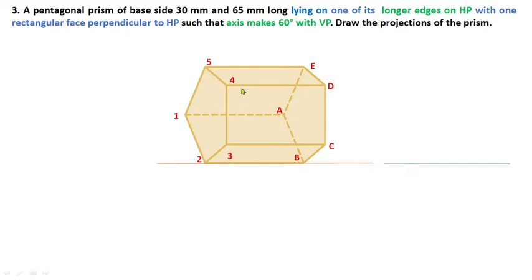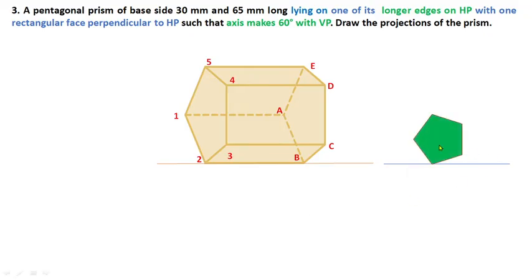From this position we can clearly identify the front view. Viewing from the front, you can see one side of the pentagon clearly with one corner touching the XY reference line. So the front view shows a pentagon with one corner on XY. We must start by drawing the pentagon with one corner touching HP, because from that corner the longer edges join the other side of the pentagon.